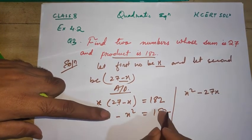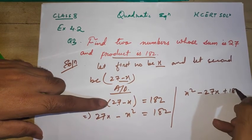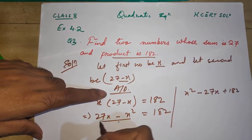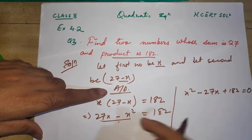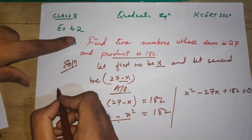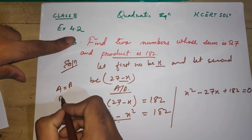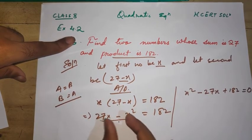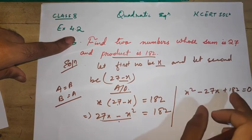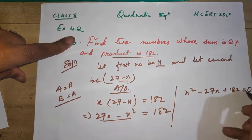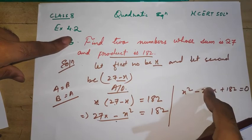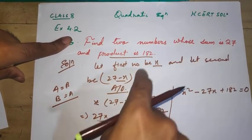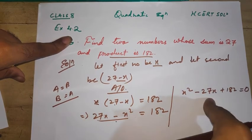So we get x squared minus 27x plus 182 equals zero. This is a quadratic equation. Now we can solve it the same way we learned.